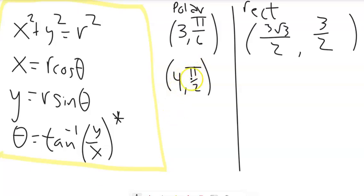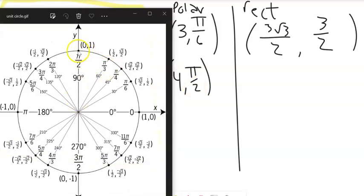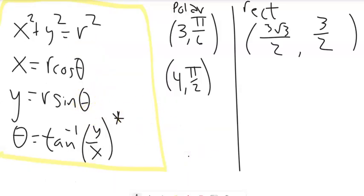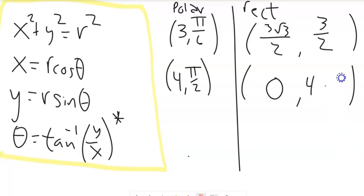Similarly, for the point (4, π/2): π/2 is straight up, so this would be the point (0, 4). You can verify with the formulas: x = 4·cos(π/2) = 4·0 = 0, and y = 4·sin(π/2) = 4·1 = 4.